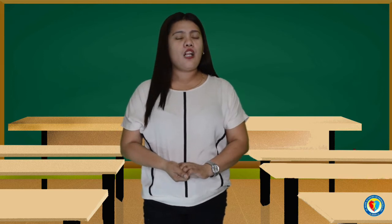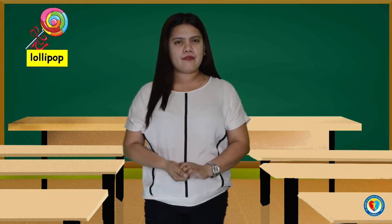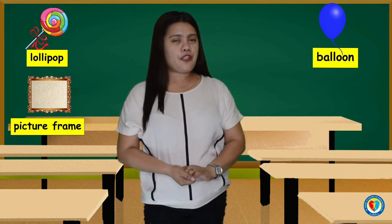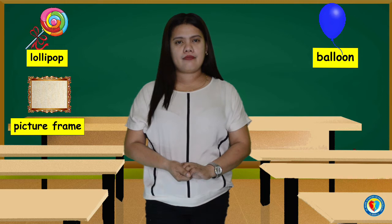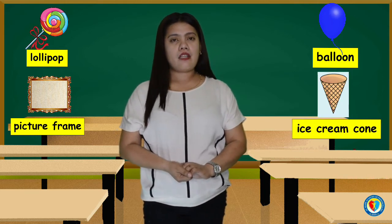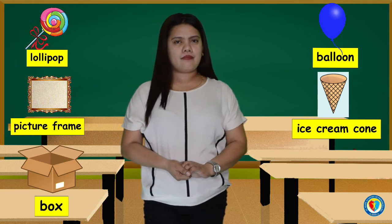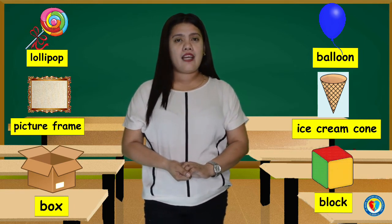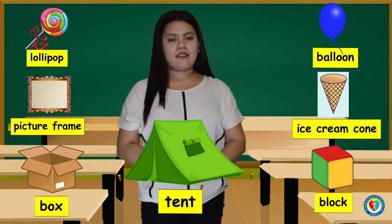Let's name these pictures: lollipop, balloon, picture frame, ice cream cone, box, block, and tent. Some balloons and lollipops are round.